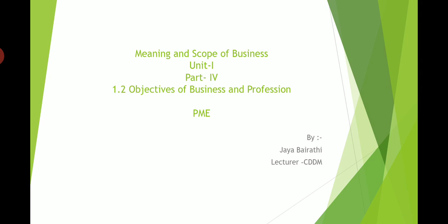Before we start, let us first understand what the word 'objectives' means. We have already discussed the meaning of business and profession. In Hindi, we call objectives 'uddeshya'. As an individual, we have different objectives. As an organization, we have different objectives. As an economy, the government has different objectives.